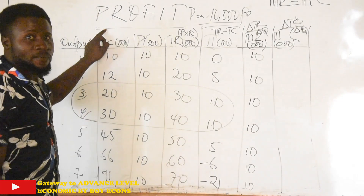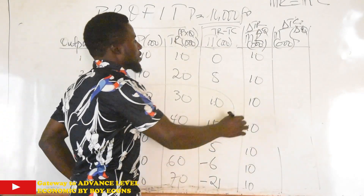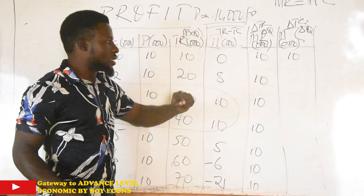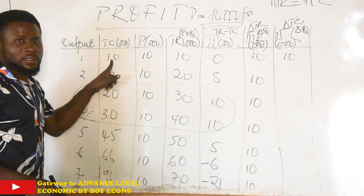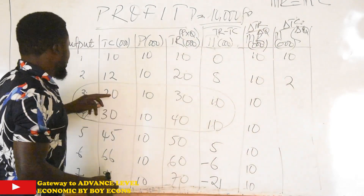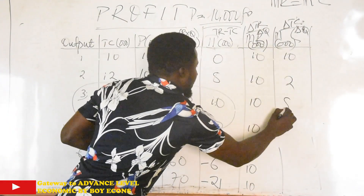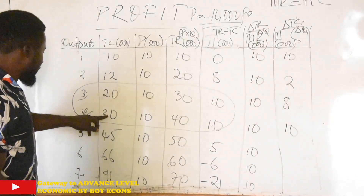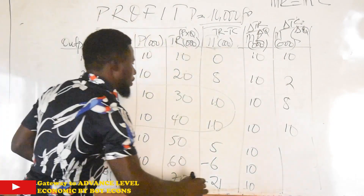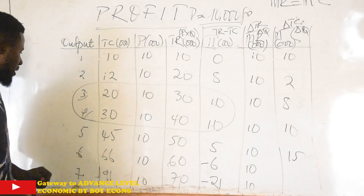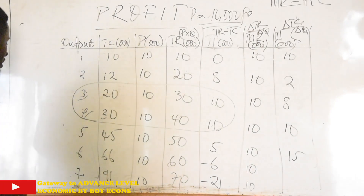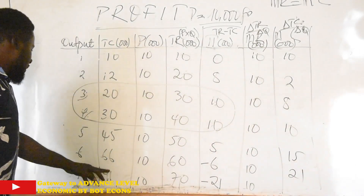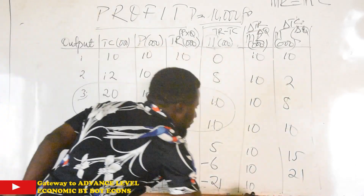Continuing to calculate marginal cost: 12−10=2÷1=2; 20−12=8÷1=8; 30−20=10÷1=10; 45−30=15÷1=15; 66−45=21÷1=21; 91−66=25. So our MC values are: 10, 2, 8, 10, 15, 21, 25. Now we can clearly see that at the fourth output level, marginal revenue equals marginal cost — both equal 10. That is how we choose the best profit-maximizing output level: by identifying where MR equals MC.